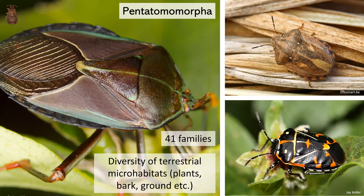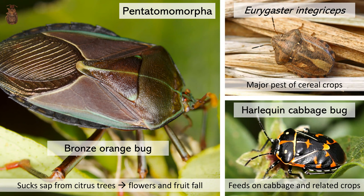Then looking at Pentatomomorphins, Pentatomomorpha is by far and wide the largest infraorder with 41 families, occupying a diversity of terrestrial microhabitats including plants, bark, the ground, and more. There are numerous pest species, making this group of critical importance to understand relationships within it.